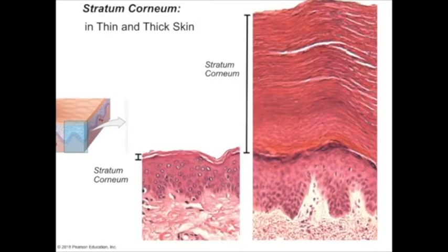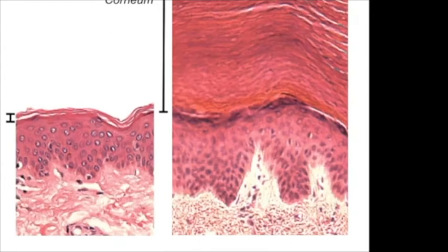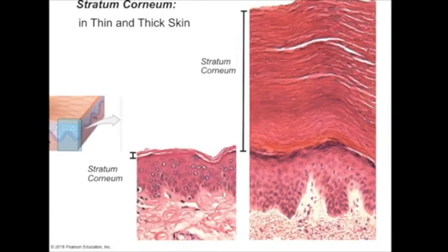The stratum corneum is also the main difference between thin and thick skin. The thickness of thick skin is due to the increased number of layers of the stratum corneum. Thick skin is also referred to as plantar skin and is located in two places: the palms of your hands and the soles of your feet.